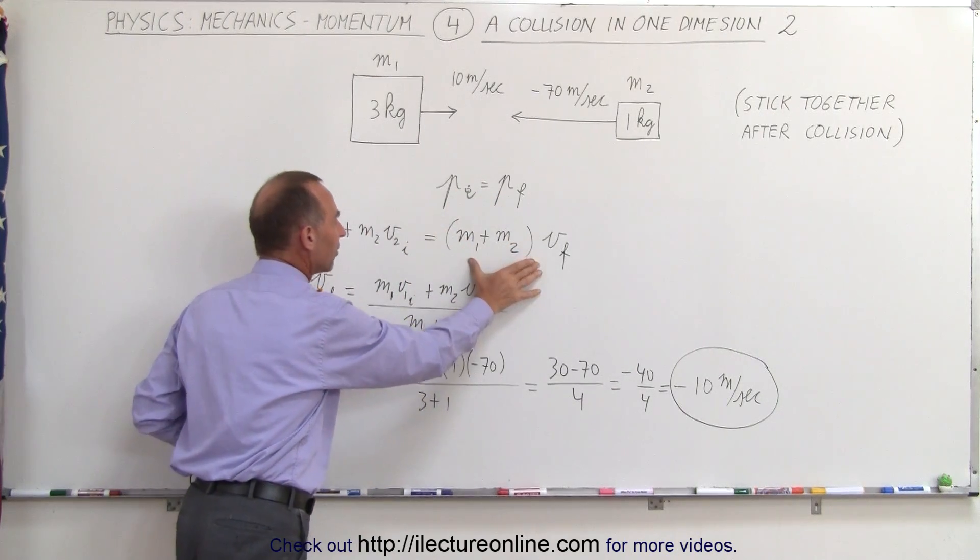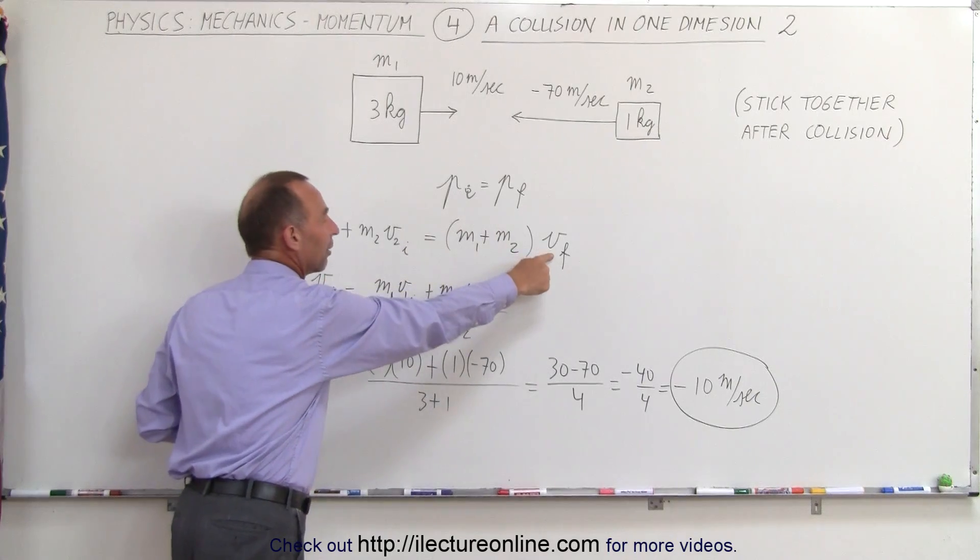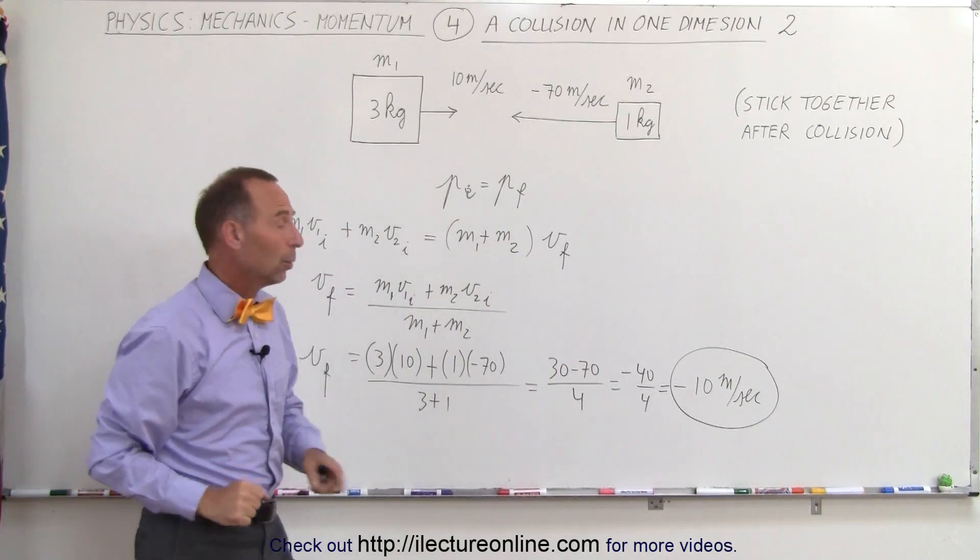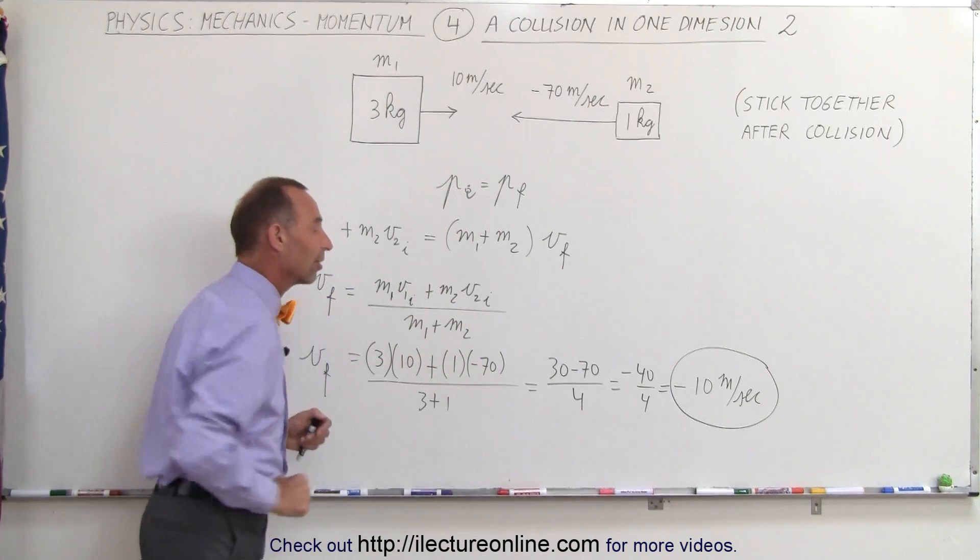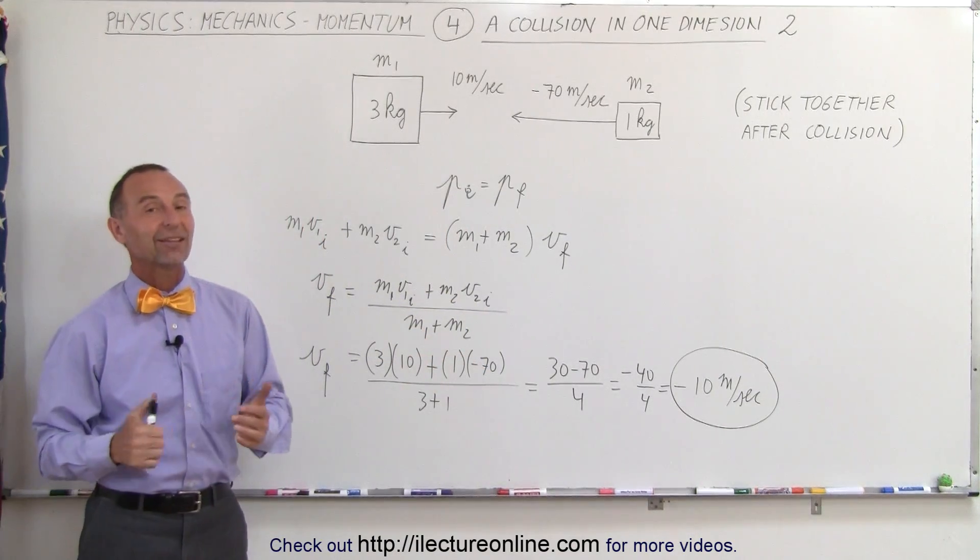then we add up the final momentum, then we solve for the unknown variable and automatically we get the magnitude and the direction if we put in the correct values in the equation. And that's how it's done.